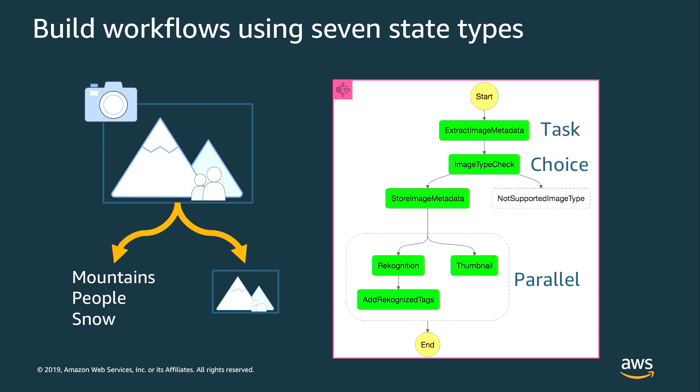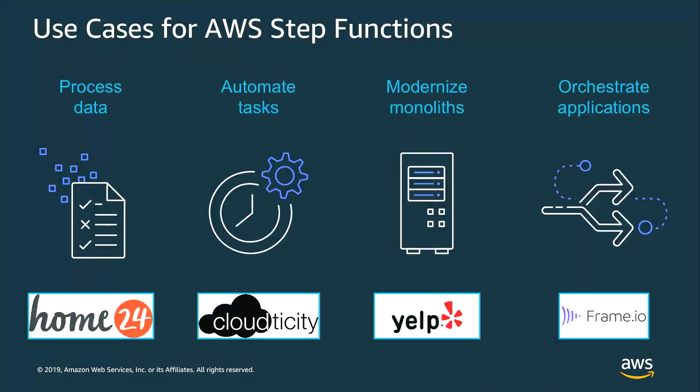So what are some of the ways that customers are using Step Functions to build serverless apps? Customers use this for a lot of different things. A common use case is processing data. Home24 is an example where they integrate information from their online advertising from different providers and want to standardize the analytics. They run a small data lake using Lambda, S3, and Step Functions — ingesting from many different sources and processing data into a standard format for their analytics. They went from a SaaS solution costing about $5,000 a month to a solution costing about $50 a month using Step Functions, Lambda, and S3.